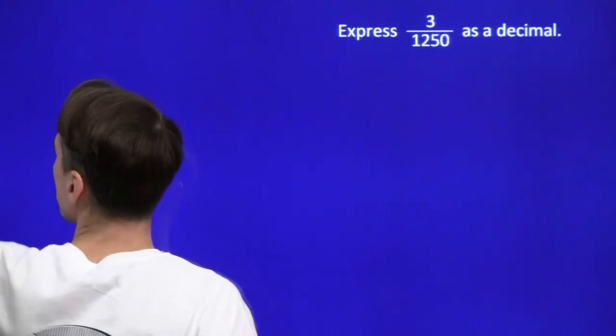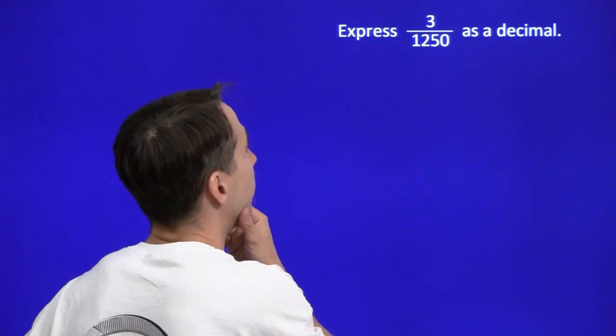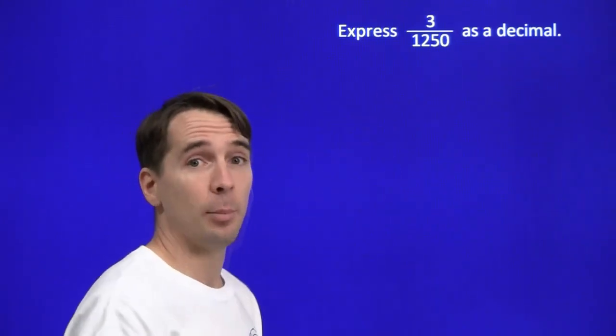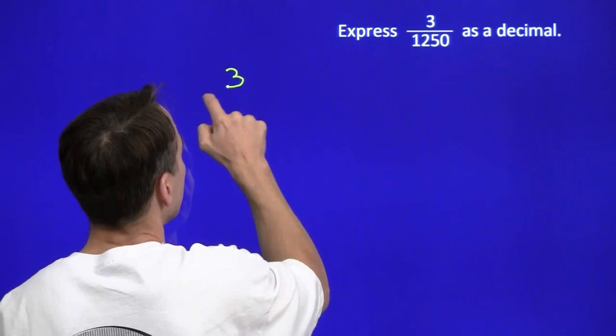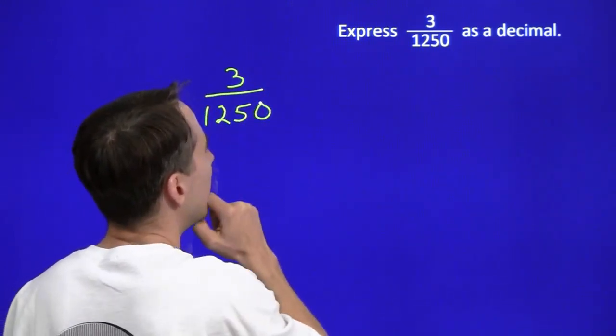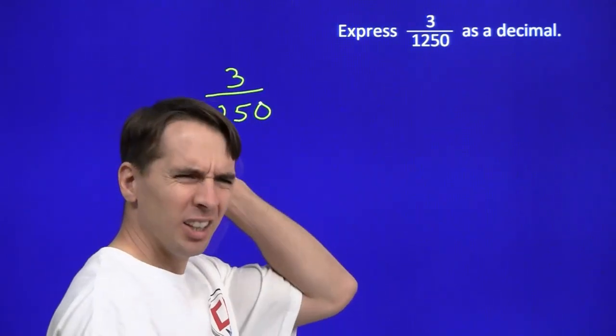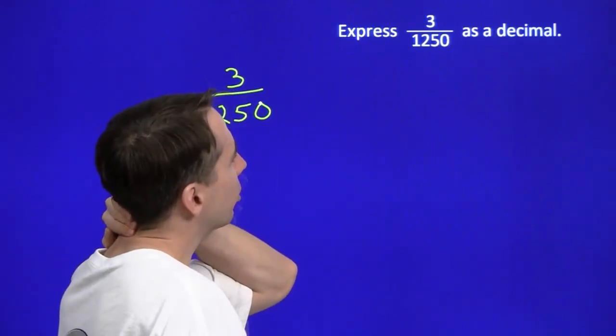Let's try one more of those. Here we've got 3 over 1250. Once again, the denominator is not a power of 10. So we want to turn that denominator into a power of 10, again by strategically multiplying by something. But what do we multiply 1250 by in order to get a power of 10?